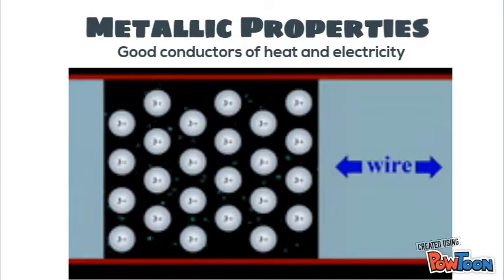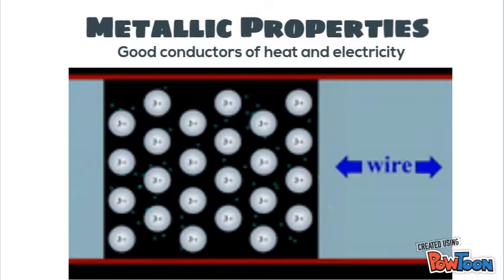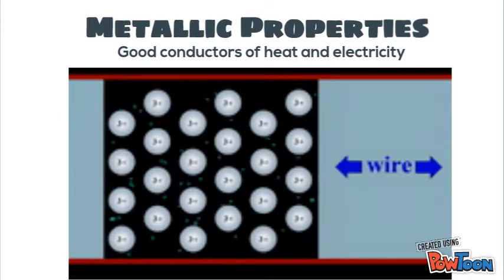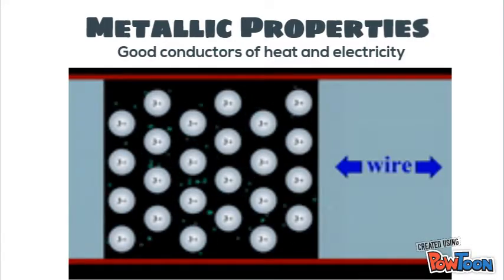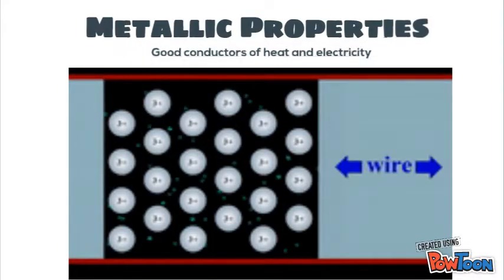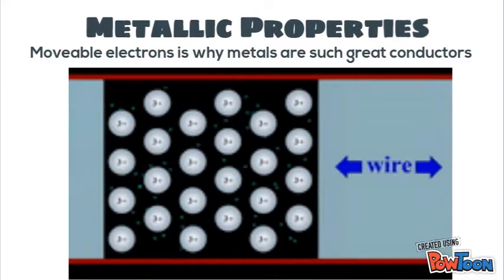Metals are also good conductors of heat and electricity. You can see here that the electrons are moving from right to left down the wire, and it's this movement that carries the heat in a metal and carries the electricity down the wire. When these electrons are able to move, they're the ones carrying the charge — movable electrons is why metals are such great conductors.